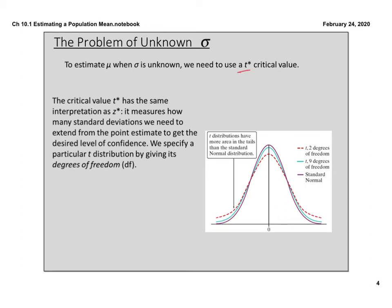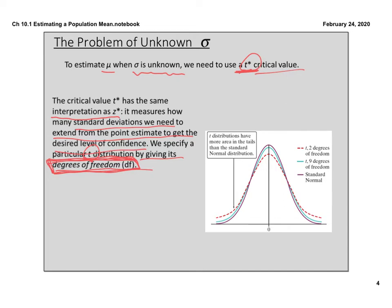To estimate a mean when the standard deviation is unknown, we are going to use a t* critical value instead of a z* critical value. The critical value t* has the same interpretation as z*: it measures how many standard deviations we need to extend from the point estimate to get the desired level of confidence. We specify a particular t distribution by giving its degrees of freedom. T distributions have more area in the tails than the standard normal distribution, which is what makes our interval a little bit wider.